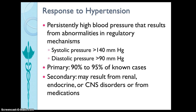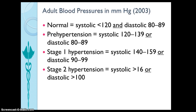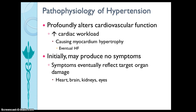Secondary hypertension can sometimes be cured by managing the underlying condition or cause. In this slide you can see the classification of hypertension. Normal blood pressure is systolic 120 and diastolic 80 to 89. Prehypertension is systolic 120 to 139 and diastolic 80 to 89. Stage 1 hypertension is systolic 140 to 159 and diastolic 90 to 99. Stage 2 hypertension is systolic above 160 and diastolic above 100.